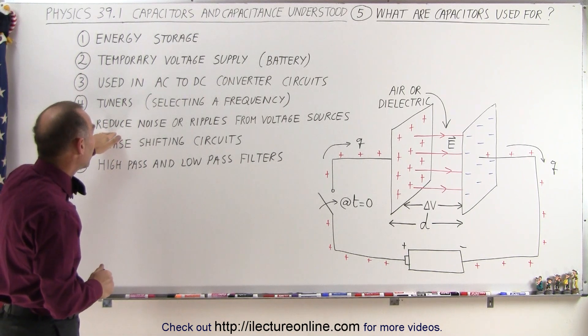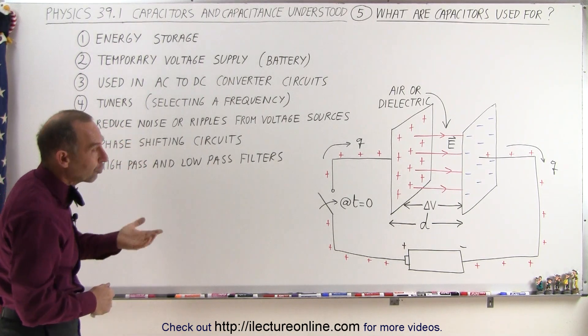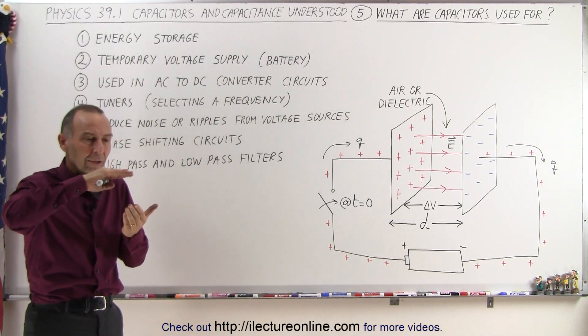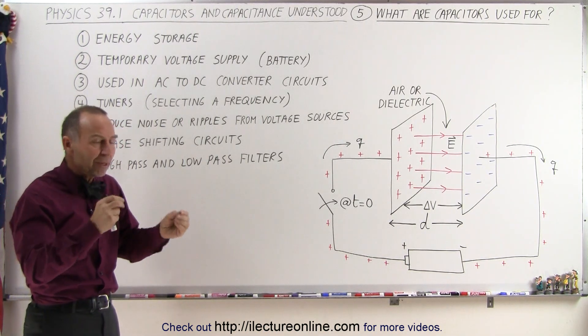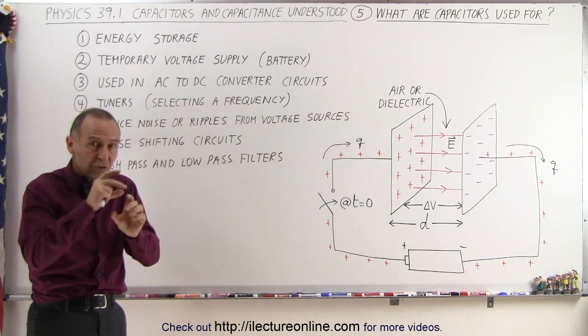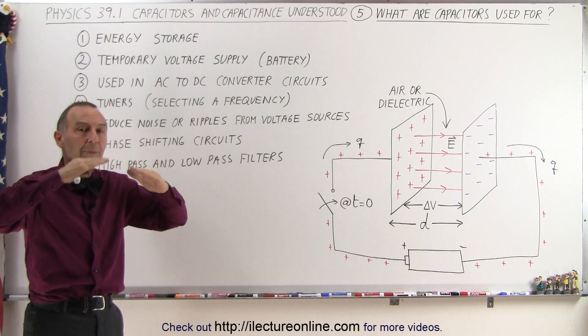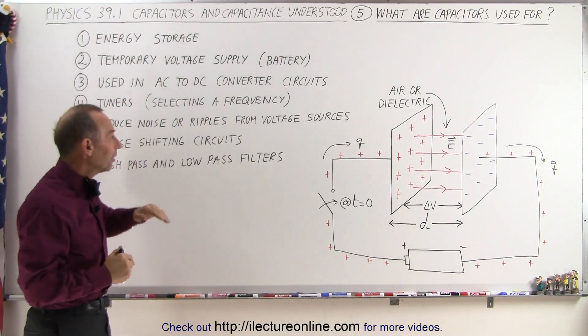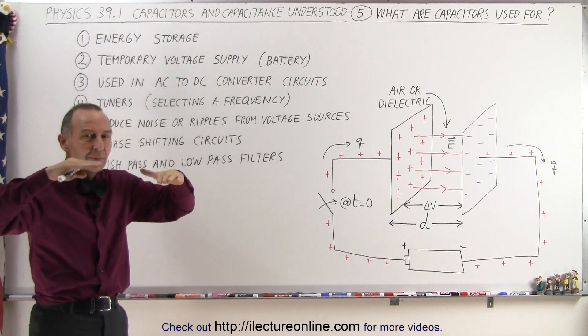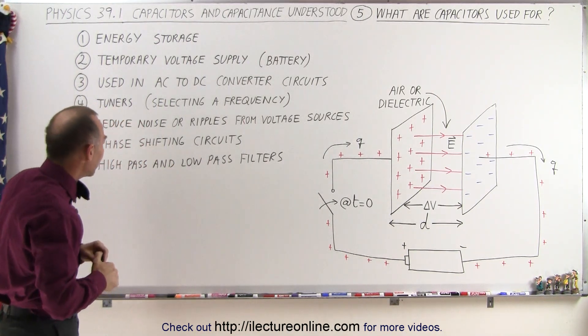We also use them to reduce noise and ripples from voltage sources in circuitry and electronic circuitry, where there could be a rippling effect because of some interaction between the components on the circuit boards. We put capacitors around some of those to absorb that ripple to smooth things out, and so we prevent things from not functioning correctly by filtering out some of the ripples.